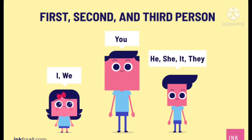Second person is used in making a statement where we are talking about the addressee. If I am talking to you, I will refer to you by saying 'you.' So 'you' is used for the second person. Then comes the third person, which indicates the third party. If you are talking about some animal or some thing, then we use 'it.' So first person indicates the speaker, second person indicates the addressee, and third person indicates the third party.